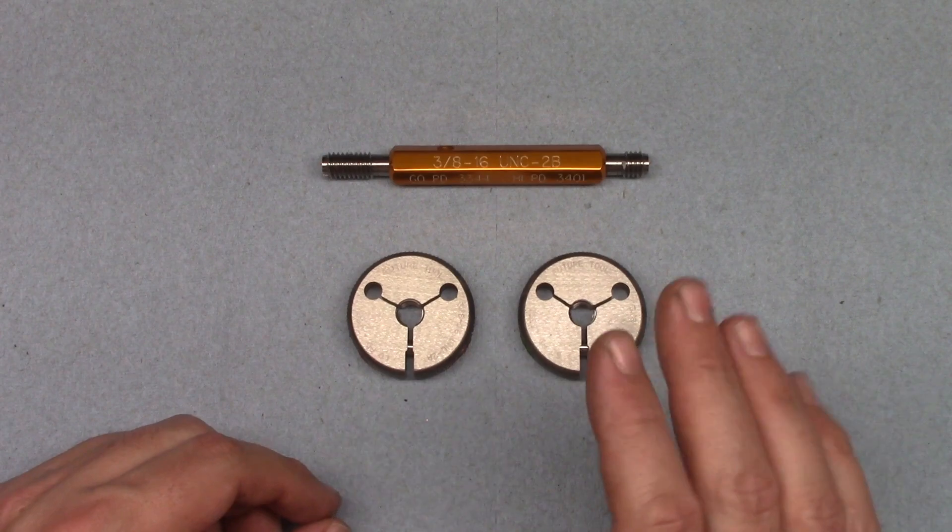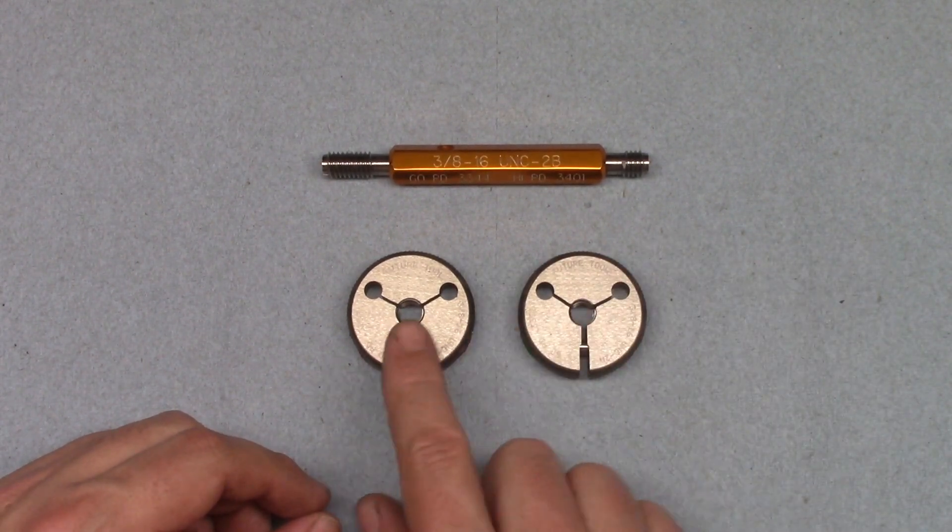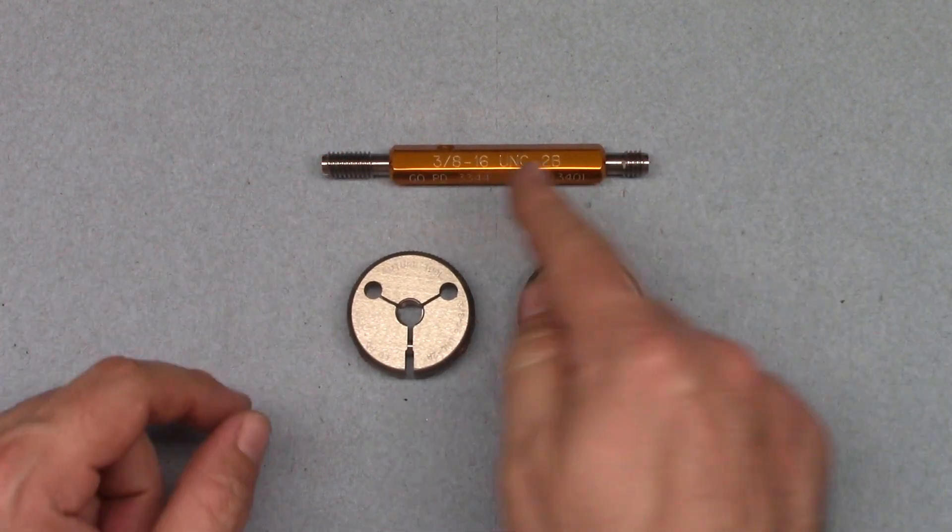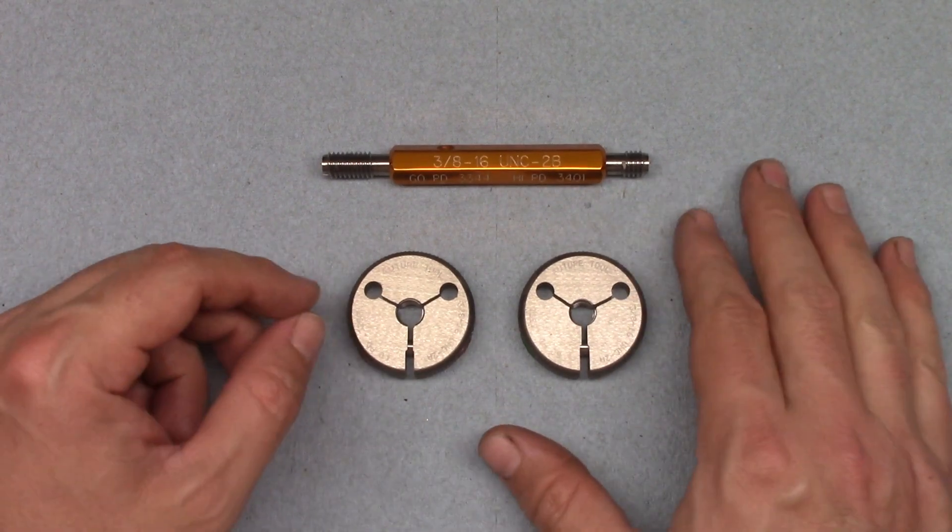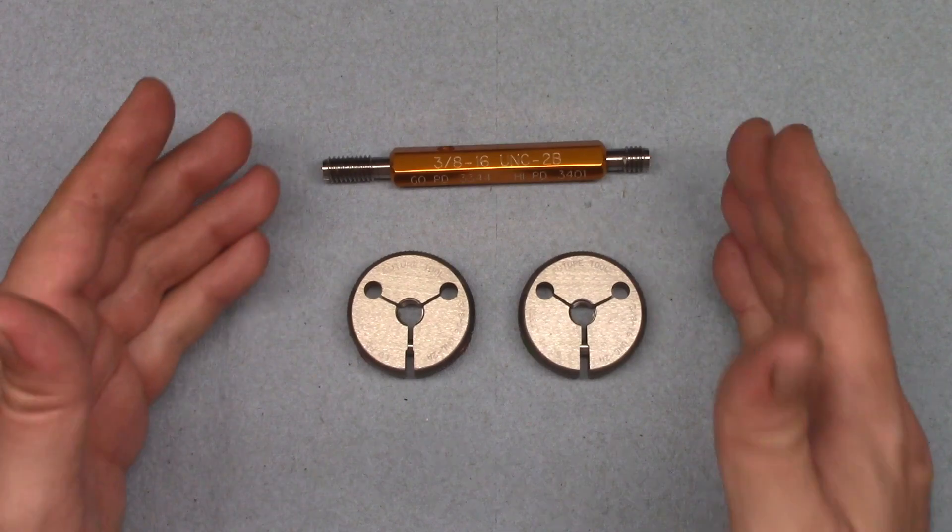The biggest downside to them is the cost. At the time of this recording, these ring gauges were just over $100 each, and the plug gauge, just as you see it here with both ends and the handle, was about $85. The replacement plug gauge members are about $35 each.